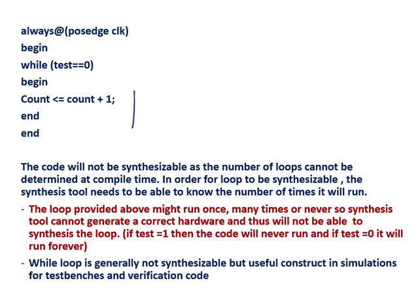The loop provided above might run once — because if test equal to equal to zero, if this condition satisfies, then count equal to count plus one. But if test is equal to one, then the loop won't be able to run for a single time. So the loop provided above might run once, or maybe many times, or never.